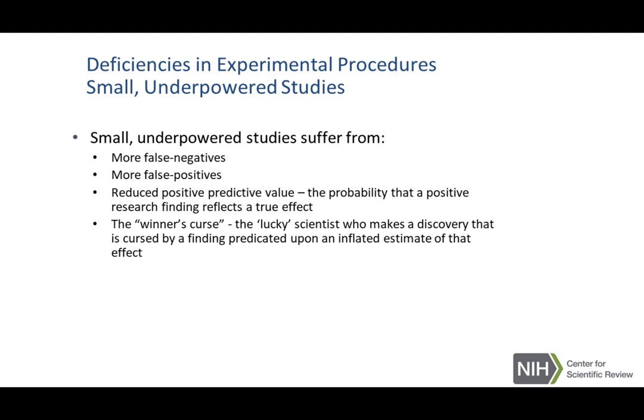There is a reduced predictive value because you have too small a population. The probability that a positive research finding actually reflects a true effect is highly reduced. Then there's something called the winner's curse. If I see something once, I am lucky — I've figured something out. But the problem is this is actually a curse. The lucky scientist who makes that first discovery has biased themselves into thinking they know what's going on, instead of looking back at all the evidence.